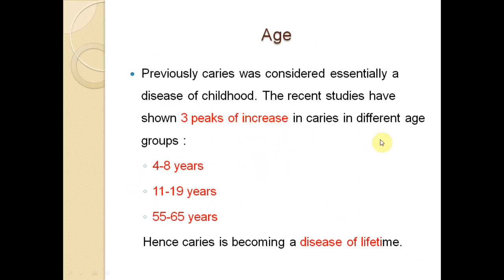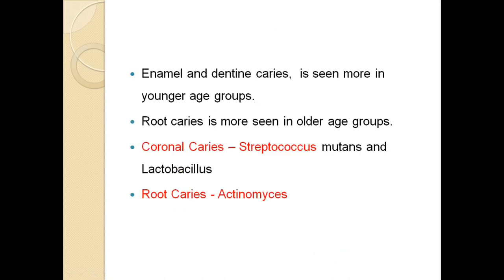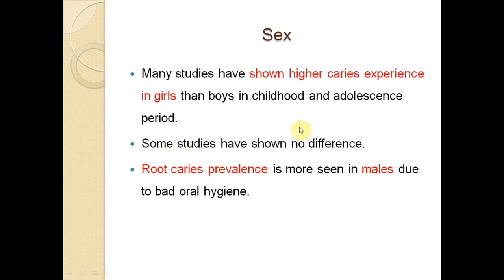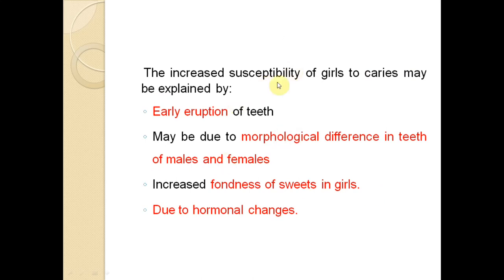For age, there are three peaks of increase: 4 to 8 years, 11 to 18 years, and 55 to 60 years. These periods involve new eruption of many teeth, and caries is becoming a disease of lifetime. Coronal caries mainly involves Streptococcus mutans, while root caries involves Actinomyces and is common in older age. Studies show that females have more coronal caries, while root caries is more common in males. Females have more caries due to early eruption of teeth, morphological differences, increased fondness for sweets, and hormonal changes.